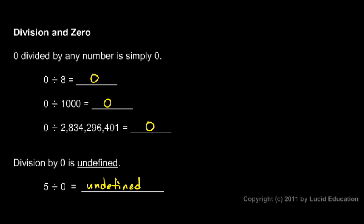So remember also that division is typically represented as a fraction. So this first example here, zero divided by eight could be written like this, zero over eight, and the answer would be zero.